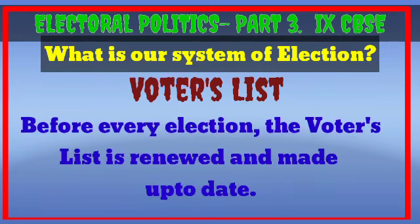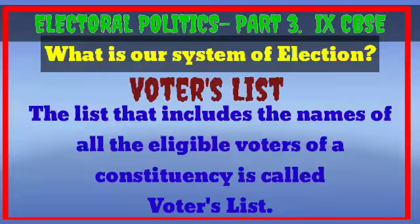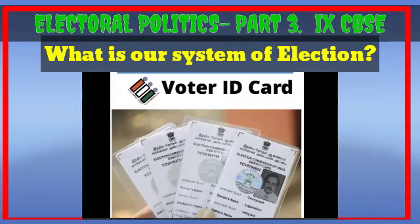Regardless of caste, religion, or gender, every adult is given the right to vote. Before every election, the voters list is renewed and updated — new adults are added and people who have died or transferred to other constituencies are deleted. In the last few years, the Election Photo Identity Card (EPIC) has been introduced. This identity card is used to vote in elections and is also accepted as an ID proof for other purposes.